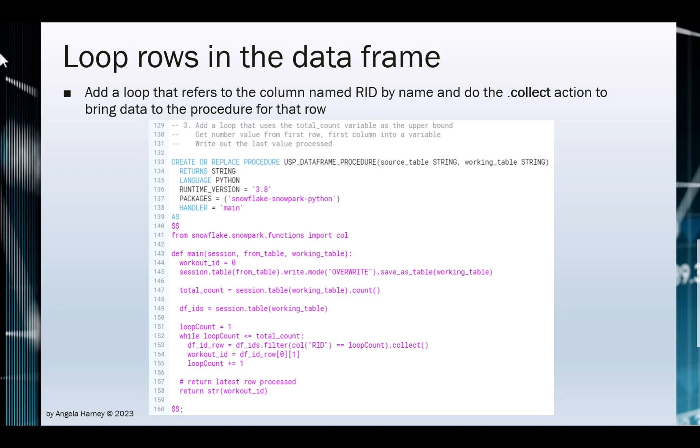Row 153 sets the variable df_id_row as a dataset object consisting of one row of the df_ids data frame that is equal to a filter where the rid column is equal to the loop count we are on.